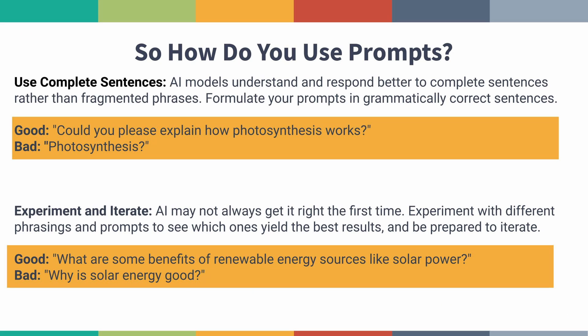Just like we teach students how to use search engines effectively, students need to learn good tips and habits for prompt engineering. AI responds better to complete sentences rather than fragmented phrases. It's also important that students know to experiment and iterate — if they don't get what they're looking for the first time, try different combinations. Try something else, see what didn't work, and how you can rephrase what you're asking to get a better answer.